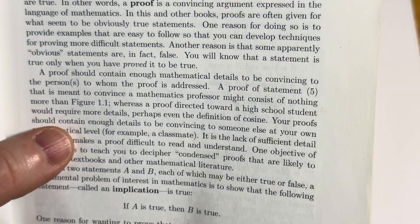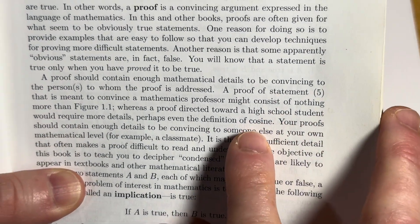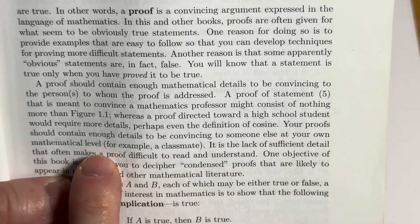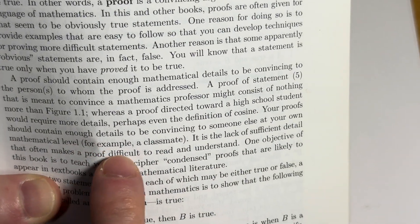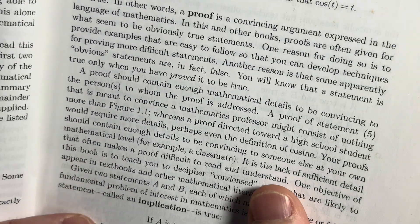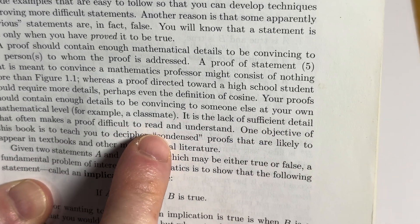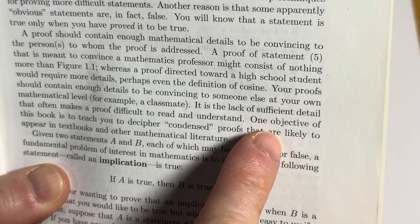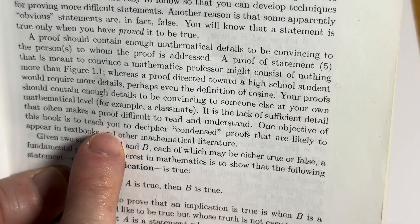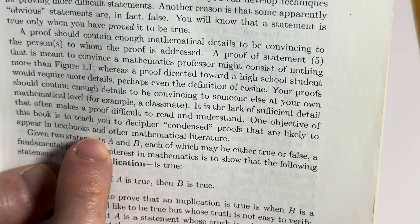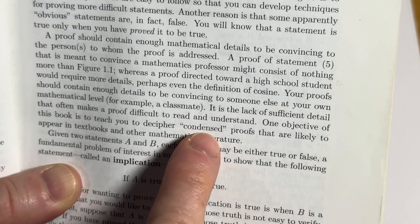Whereas a proof directed toward a high school student would require more details, perhaps even the definition of cosine. Your proof should contain enough details to be convincing to someone else at your own mathematical level, for example, a classmate. It is the lack of sufficient detail that often makes a proof difficult to read and understand.